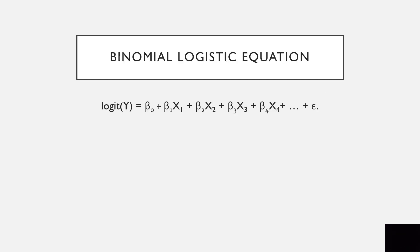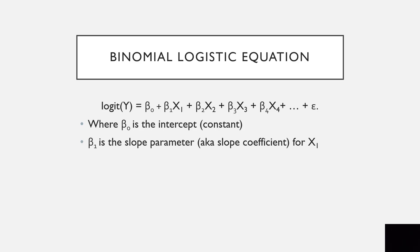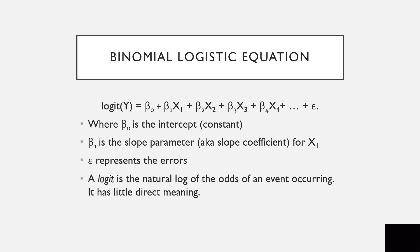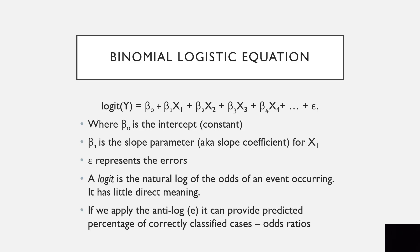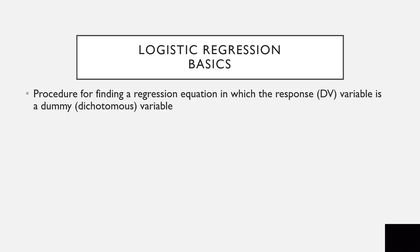Here is the binomial logistic equation, where beta naught is the intercept, beta 1 is the slope parameter — also called the slope coefficient — for the first variable x1. E represents the errors, and a logit is the natural log of the odds of an event occurring. It has little direct meaning, but if we apply the anti-log, which is Euler's number E, it can provide predicted percentage of correctly classified cases as odds ratios.